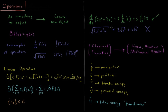What about the square root? If I take the square root of (2x² + 3x), is that equal to 2 times the square root of x² plus 3 times the square root of x? This is not true in general — it may be true for a few values of x, but not for every value of x. So the square root is not a linear operator.